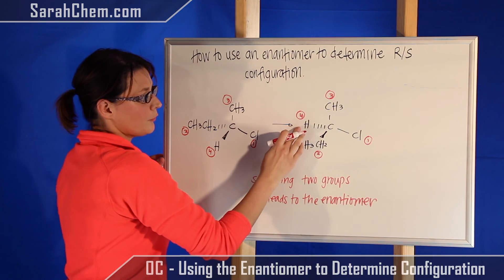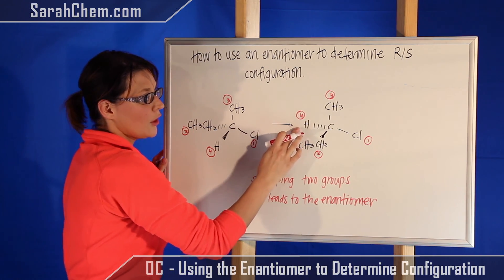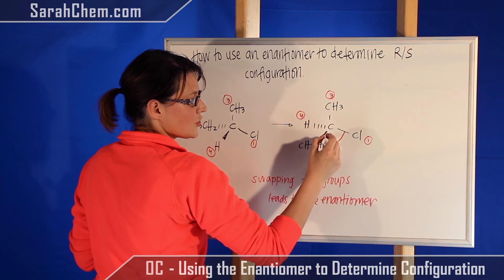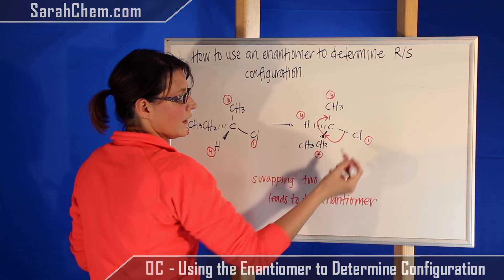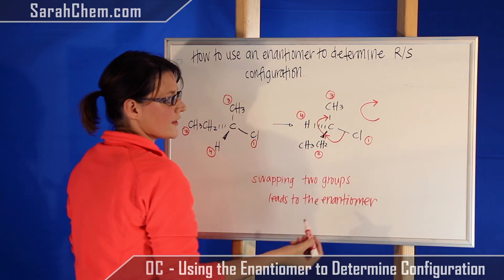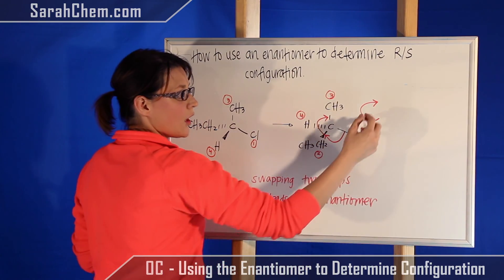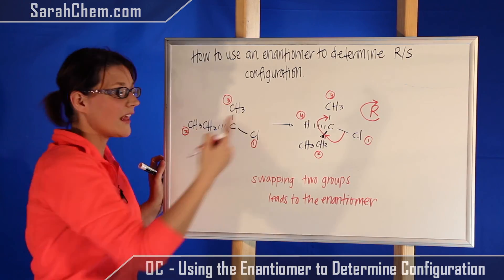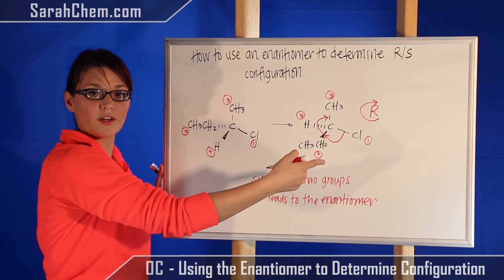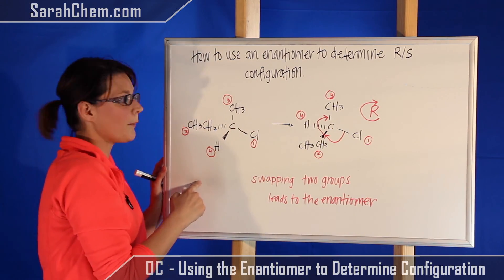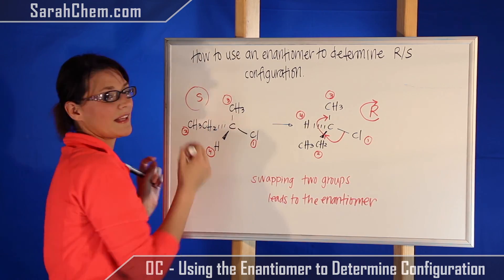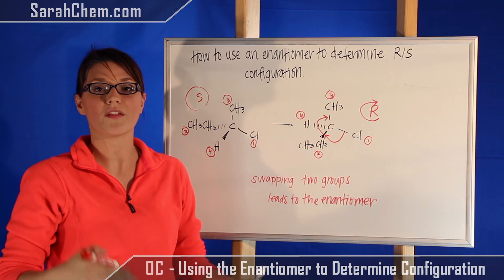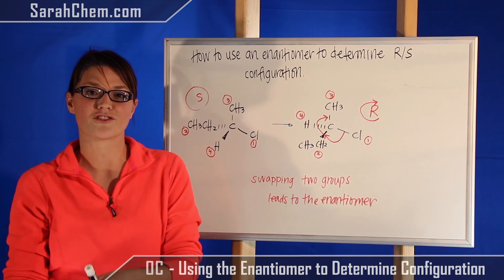Now that we have group four on that hatched wedge position, we can then do the final step. Draw an arrow going from one to two, and then two to three. We're moving in a clockwise direction, which means that this compound here has an R configuration. Then if the enantiomer is R, we know that the original compound had to be S. So that's how you can use an enantiomer to figure out what the configuration is of an original compound.